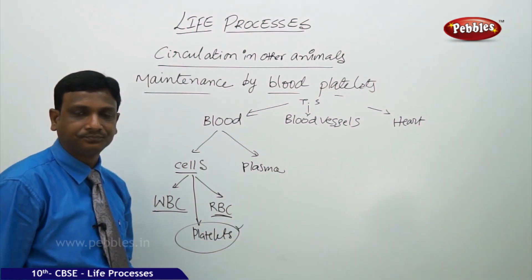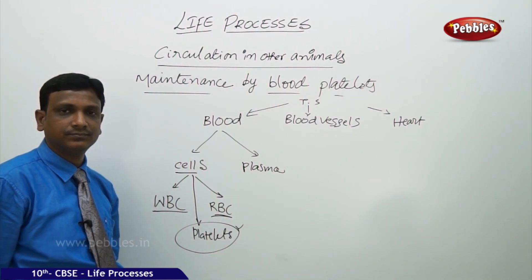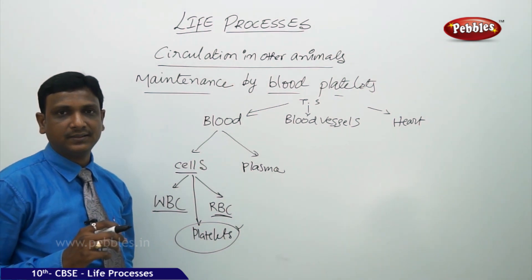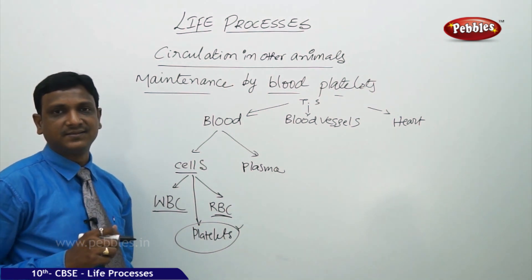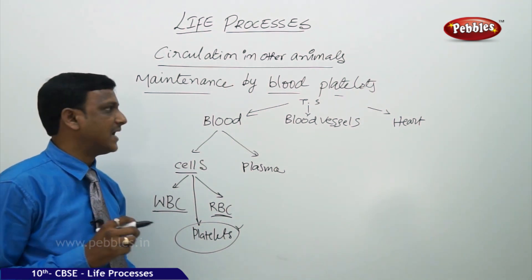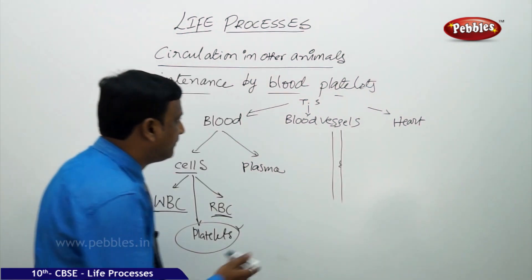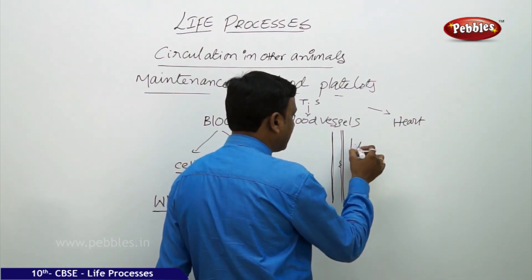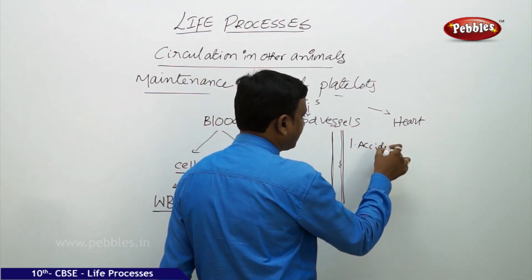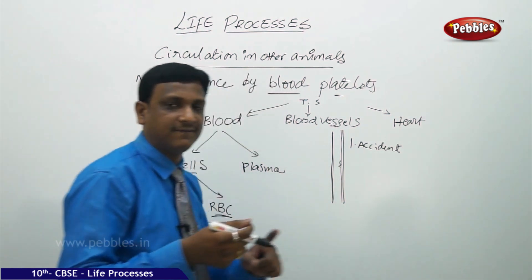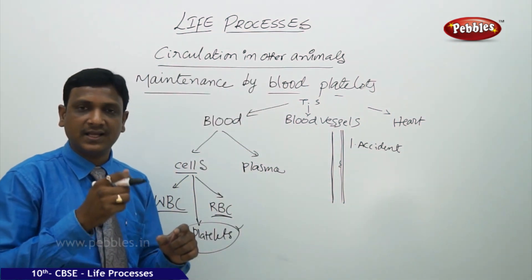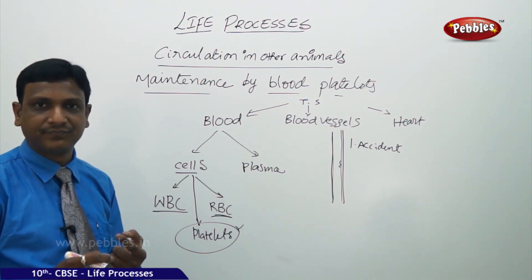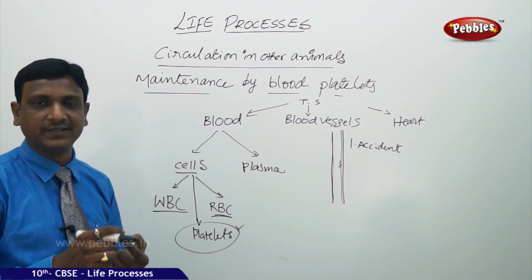What are these platelets? These platelets help in clotting of the blood if there is any damage to the blood vessels. Why are blood vessels damaged? It may be because of an accident — for example, accidentally while cutting vegetables or fruits, you may have some cut.